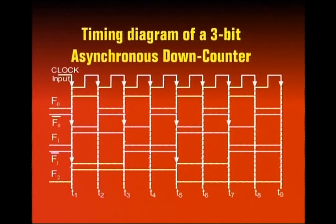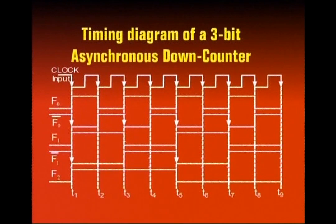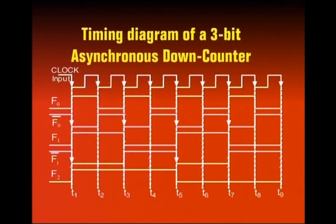At T2, the clock input transitions high to low, causing F0 to go high to low, and F0-bar to go low to high. Since this is a positive transition on F0-bar, the second flip-flop is not affected because it is negative edge triggered. So F1 has no change, and consequently the third flip-flop's input also has no clock change, so its output remains unchanged. At T3, the clock transitions high to low, F0 goes from 0 to 1, F0-bar goes high to low. This high-to-low transition on the second flip-flop's clock causes it to toggle — F1's state was 1, so it becomes 0.